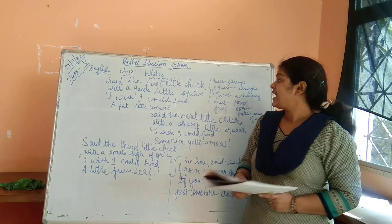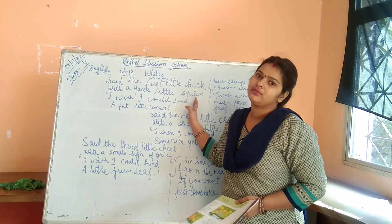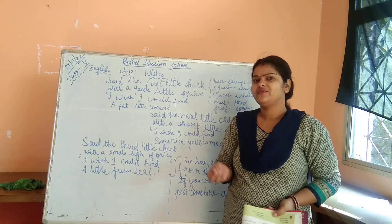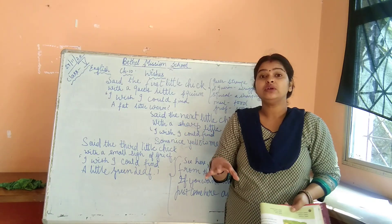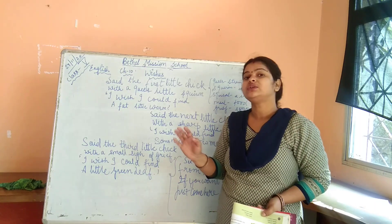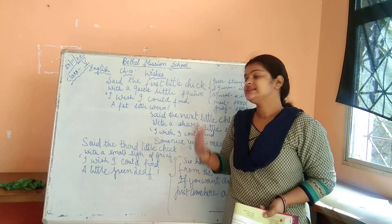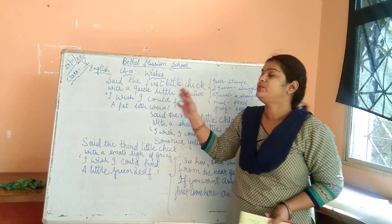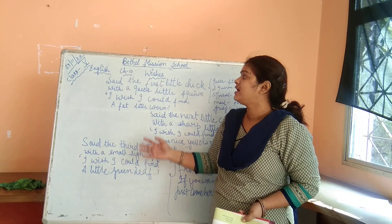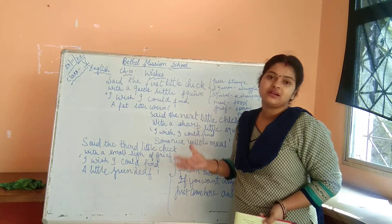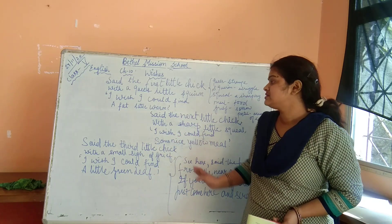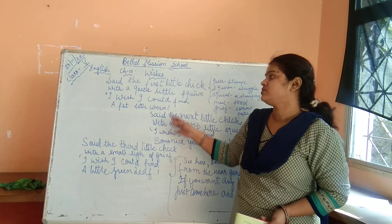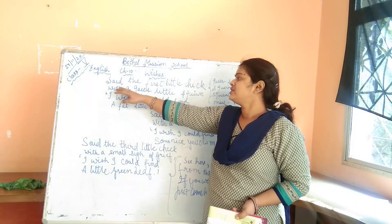This is a poem and it is a wishing poem. Everyone has a wish in life, and without wish, hope, and determination to fulfill it, there is no concept of getting happiness in life. So this is a wishing poem, and the poet wants to explain that in this poem there are three chicks and a hen. When I explain each part, you will have a better understanding. Let's begin with the explanation.